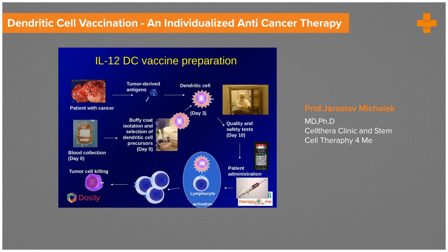Once the patient is ready, we start administration — typically a subcutaneous injection of the dendritic cell vaccine. The goal is to have five million dendritic cells per vaccine dose. In vivo, we can see lymphocyte activation through the presentation of specific tumor antigens by dendritic cells, followed by clonal expansion of tumor-specific T cells, and finally tumor cell killing.